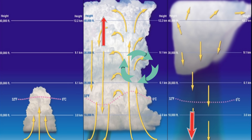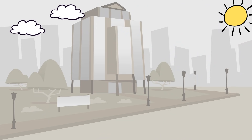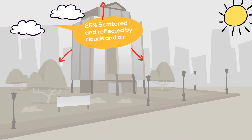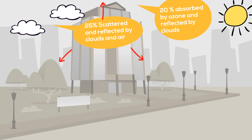As this energy from the sun enters the atmosphere, several things happen. First, about 25% is scattered and reflected by the clouds and air. 20% is absorbed by the ozone, clouds, and atmospheric gases.